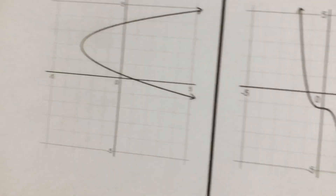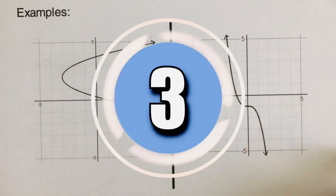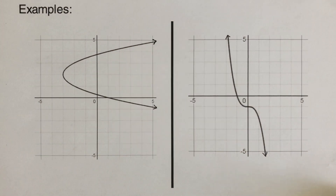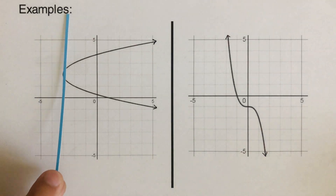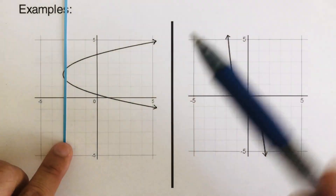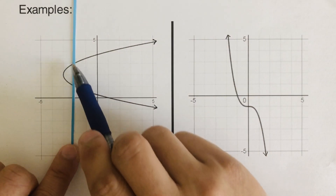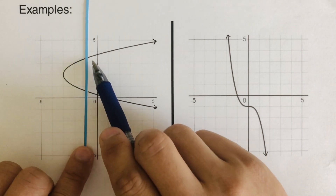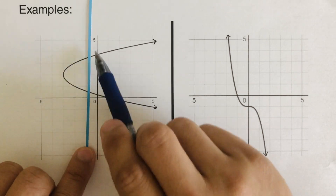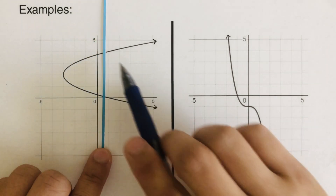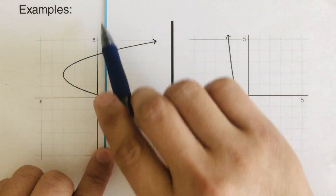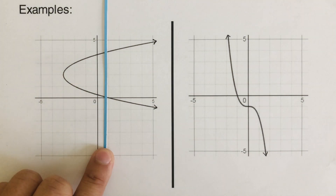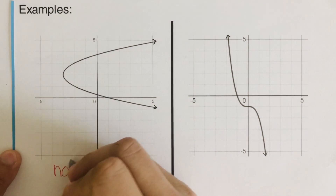Now try this one out on your own. So for the first graph, this is touching at two points on this vertical line. The condition is that in order for a graph to be a function, it should touch this vertical line at one point only. Since it's touching at two points here, this is not a function.